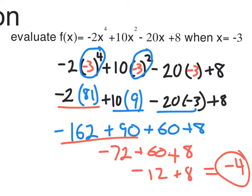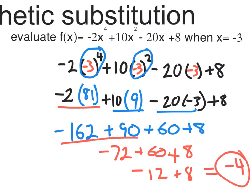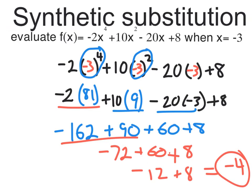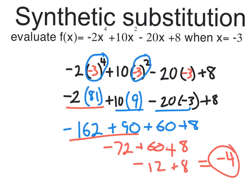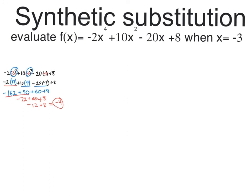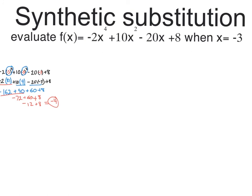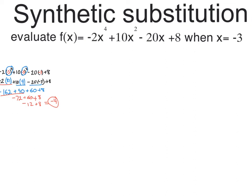So why are we going back to algebra 1 and doing this plugging in business or substituting business? Because there's a faster way to do it, which would be synthetic substitution. What we're going to do is minimize this work and do this synthetic substitution in a shortcut way and get the same answer, negative 4.